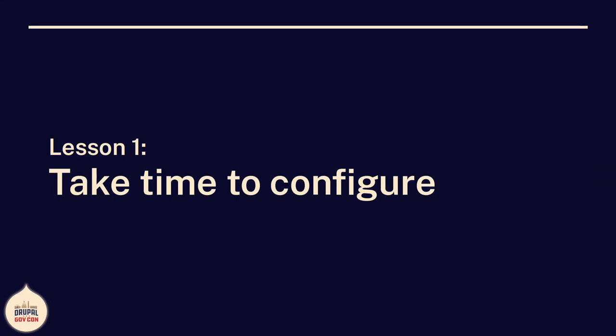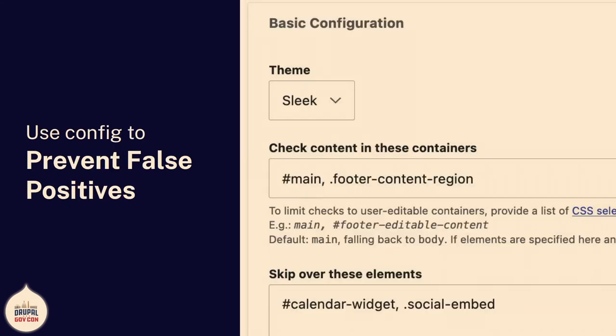Lesson one: set aside time to configure. I wanted this to be turnkey, and it really succeeded — if you turn this on your site, it's probably going to work. But you might be getting false positives, role-irrelevant alerts. There's config where you can constrain it to say 'these are the parts of the page our content editors can actually edit — don't give them alerts in the menu, don't give them alerts in the footer.' You can skip over elements within that area. If you have social media embedded widgets or calendar widgets throwing alerts they can't fix, you can map those out.